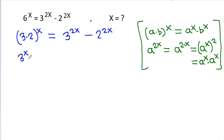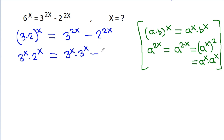So, it will be 3 to the power x times 2 to the power x, that is equal to 3 to the power x times 3 to the power x, minus 2 to the power x times 2 to the power x.